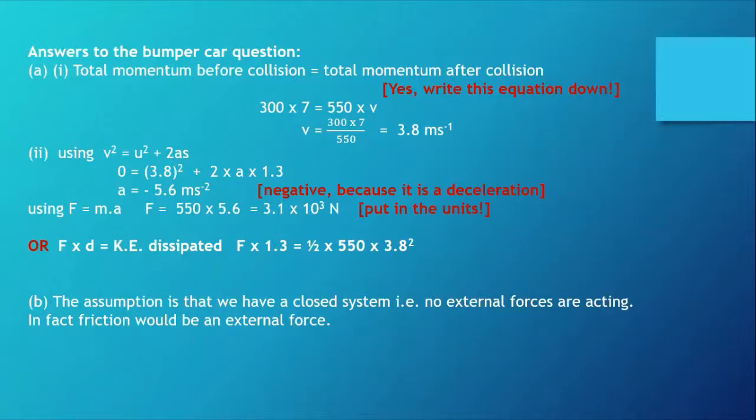I decided to use v squared equals u squared plus 2as for part 2 to work out the acceleration, well actually it's a deceleration, because this combined mass of dodgem cars is coming to rest. I get the acceleration is minus 5.6, of course it's a deceleration. Using f equals ma, I get that the force is about 3.1 times 10 to the 3 newtons, 3.1 kilonewtons.